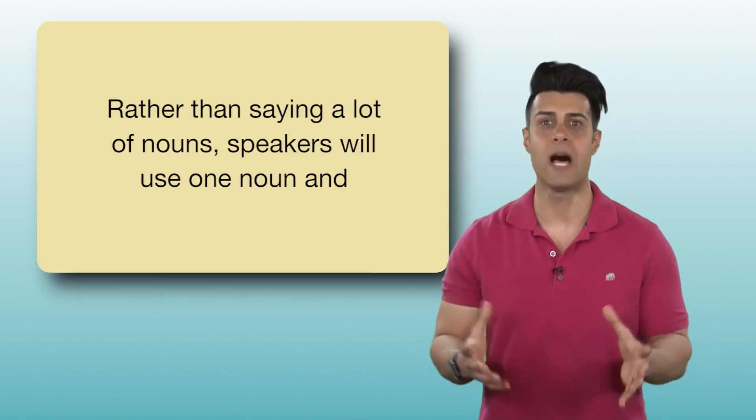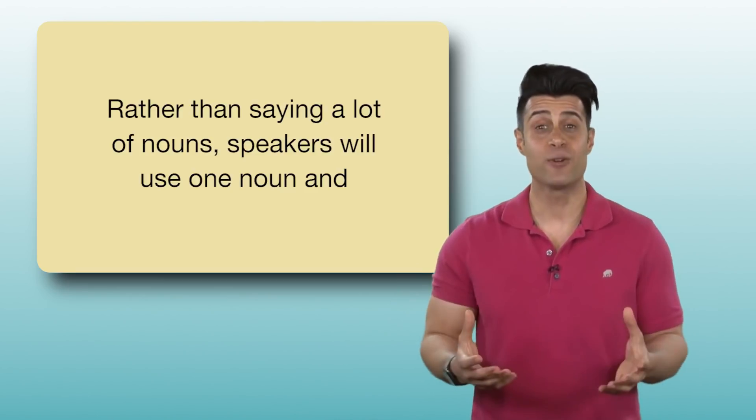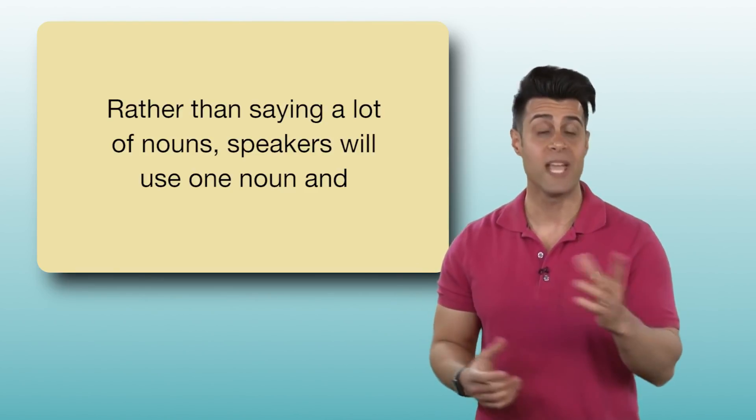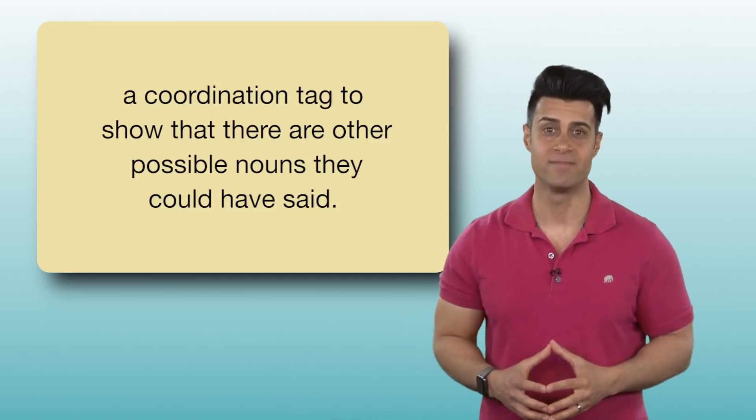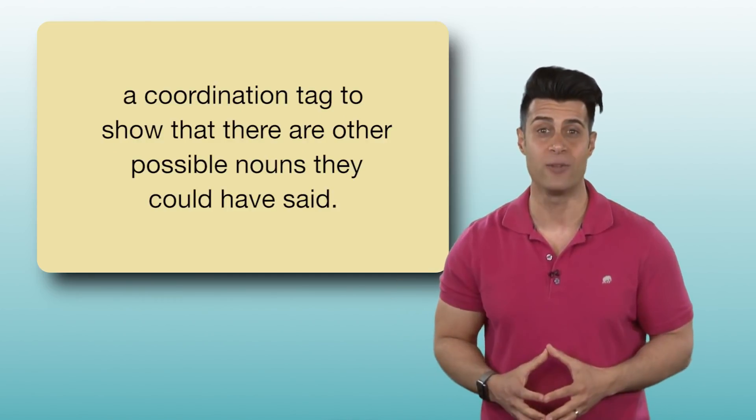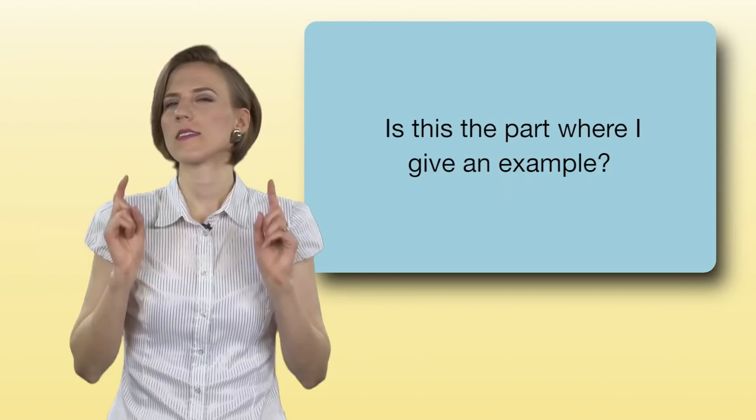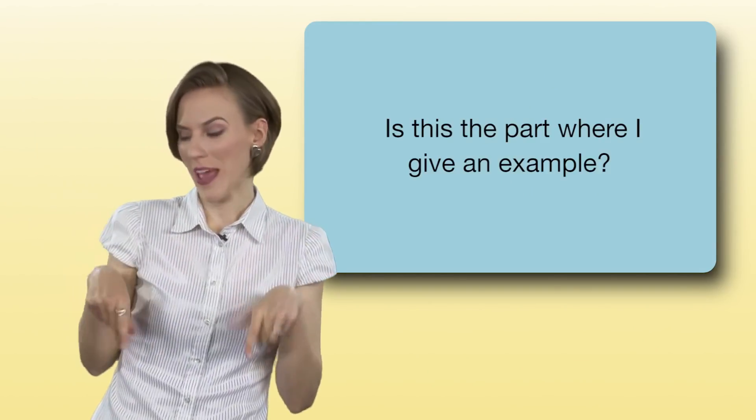Rather than saying a lot of nouns, speakers will use one noun and a coordination tag to show that there are other possible nouns they could have said. Is this the part where I give an example?